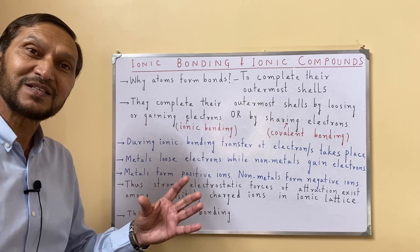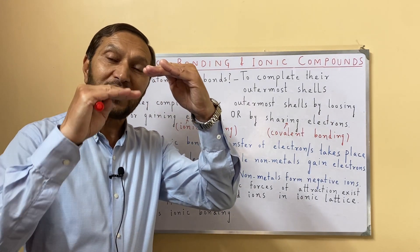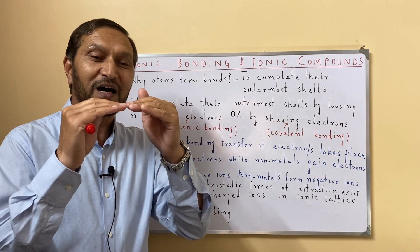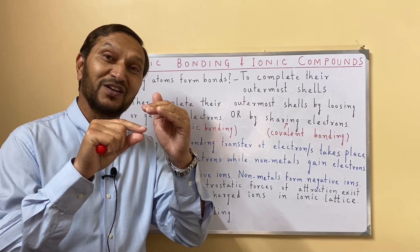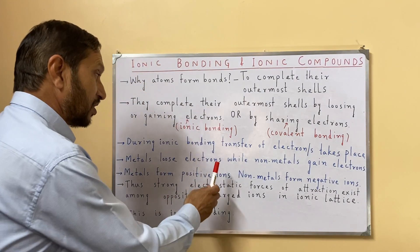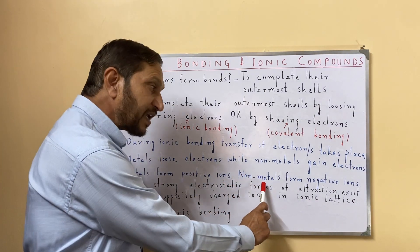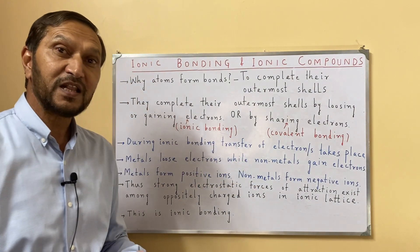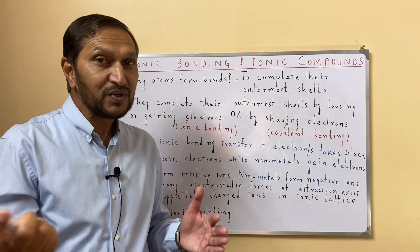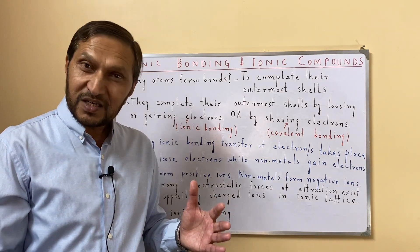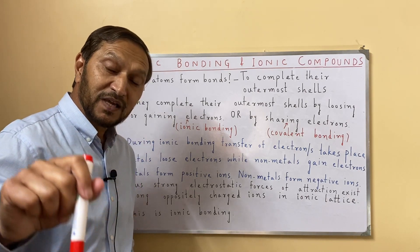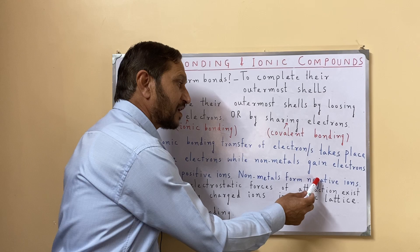When metallic atoms lose electrons, they form positive ions. Originally every atom is neutral. When electrons are lost, protons in the nucleus are in excess, so metals acquire a positive charge and form positive ions. On the other hand, when non-metallic elements gain electrons, the electrons become surplus. Since electrons are negatively charged particles, when they are in excess the non-metals form negative ions.